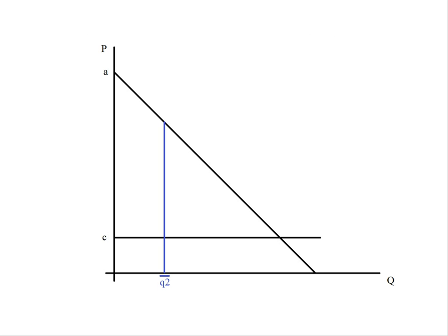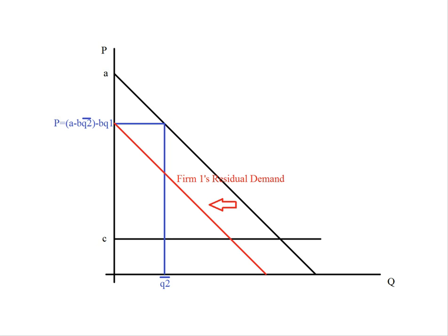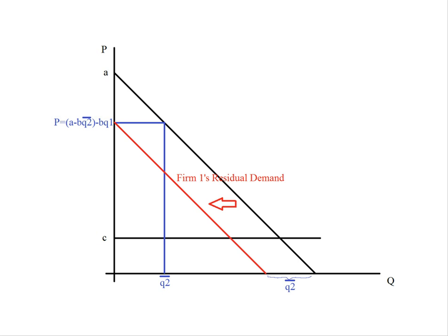We can see this diagrammatically. We plug in some output for firm two — everybody above that price has bought the first Q2-bar units, and everybody to the right forms firm one's residual demand, which we can plot right up against the axis. The residual demand has shifted in by exactly the amount of output that the other firm produced, which matches our intuition: as the other firm's output goes up, the demand curve intercept for the residual demand of firm one goes down and shifts in.